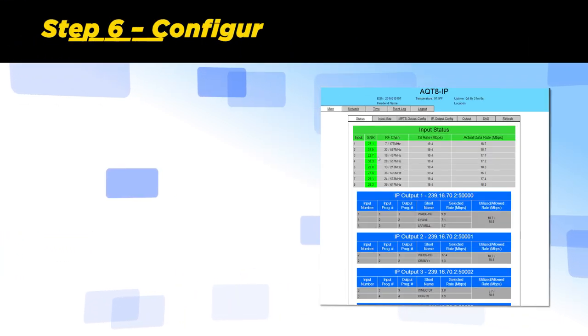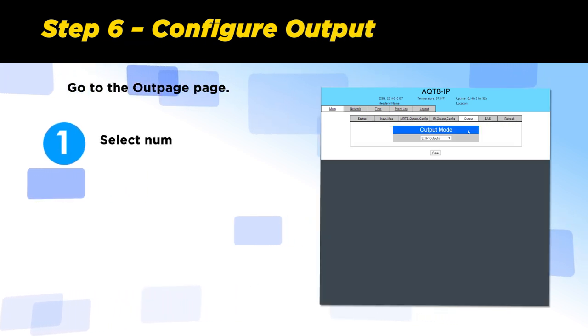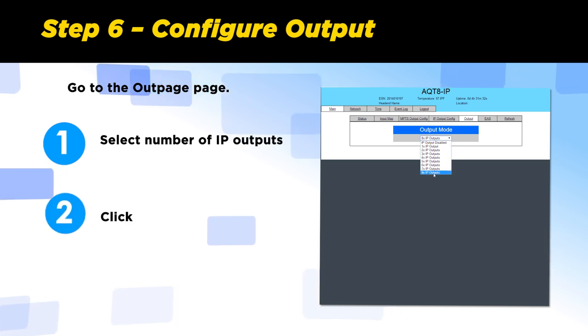Step 6: Configure the output. Go to the output page. Select the number of IP outputs. Click save.